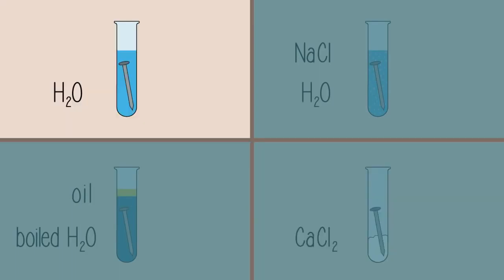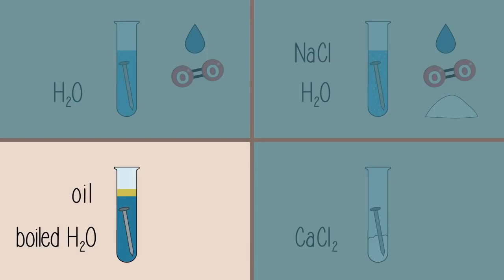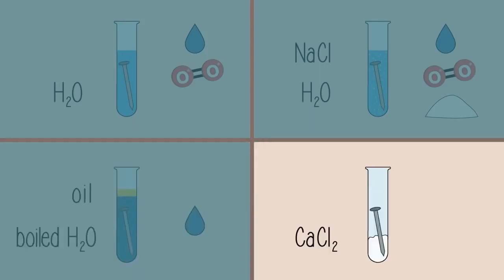So in the first test tube, the nail is exposed to oxygen and moisture. In the second test tube, the nail is exposed to oxygen, moisture, and salt. In the third test tube, the nail is only exposed to water. In the fourth test tube, the nail is exposed only to oxygen.